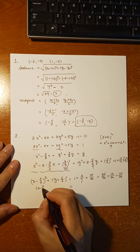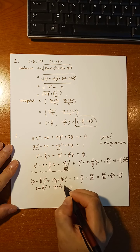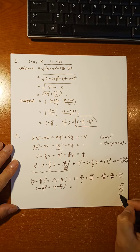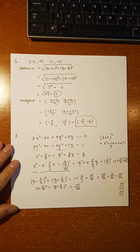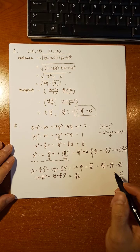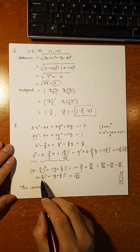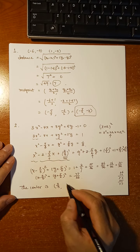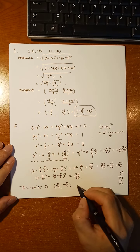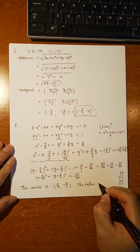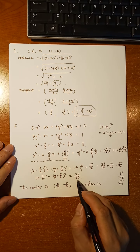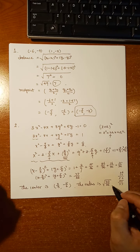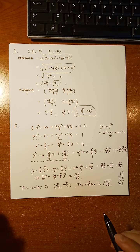Continuing the addition on the right side: 36 plus 16 is 52, plus 25 is 77, giving us 77 over 36. The center: be careful, the standard form is (x minus h) squared plus (y minus k) squared, so the x-coordinate of the center is 2 thirds, and the y-coordinate is negative 5 over 6. The radius is not 77 over 36 — you must take the square root because the right side is r squared. So the radius is the square root of 77 over 36.